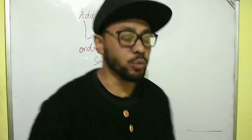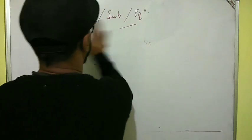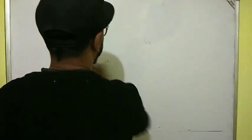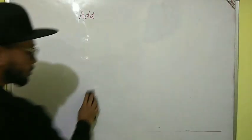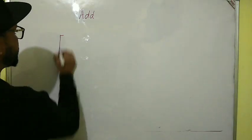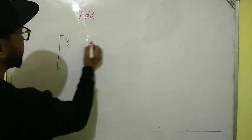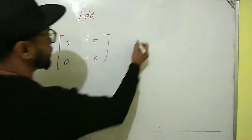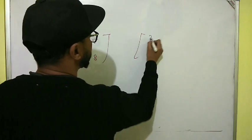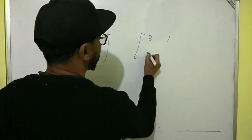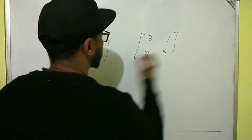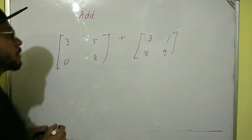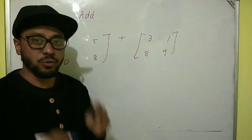Let me explain with an example. First, addition. Let's take two matrices: [3, 5, 0, 8] and [3, 1, 8, 9]. We are adding these two matrices, so what we do is add the first element with the first, second with second, and so on.